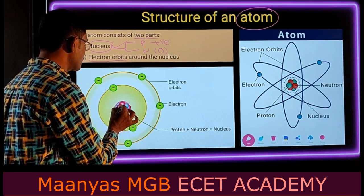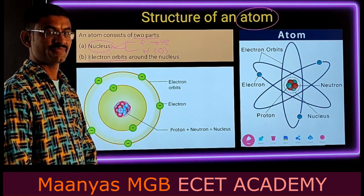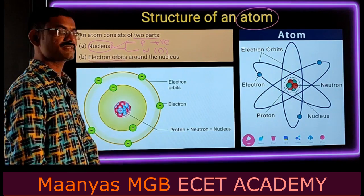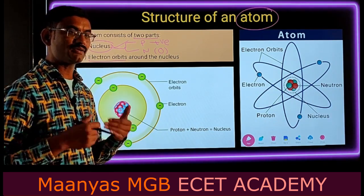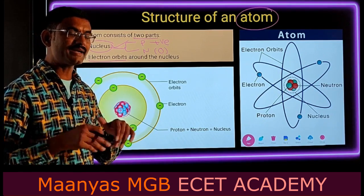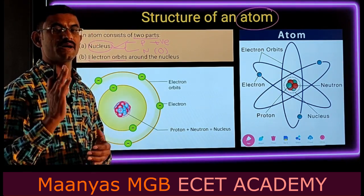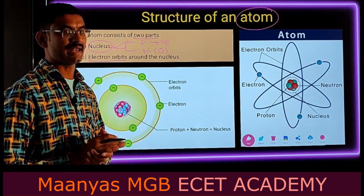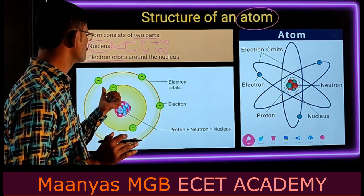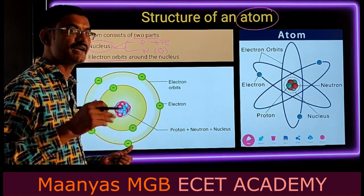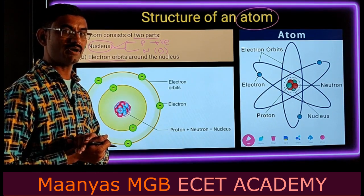Neutrons are represented using red color. Next, electron orbits. How can you define an electron orbit? First, let us define electrons. The negatively charged particles are known as electrons. These electrons revolve around the nucleus in different paths. The path of an electron is known as an electron orbit.